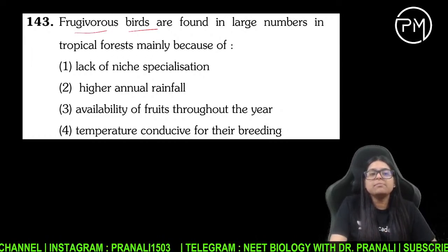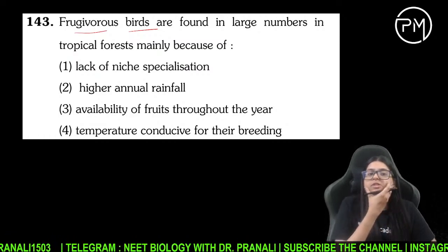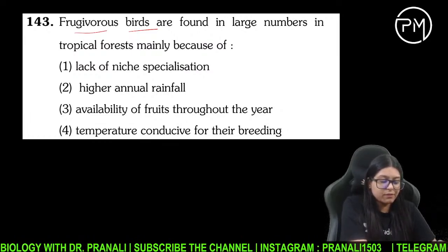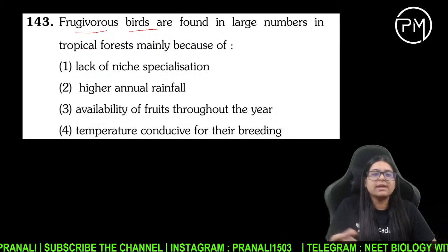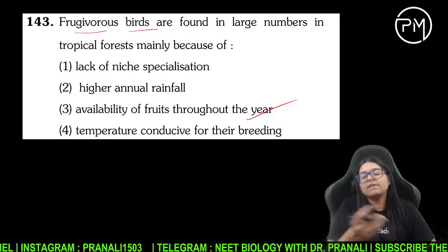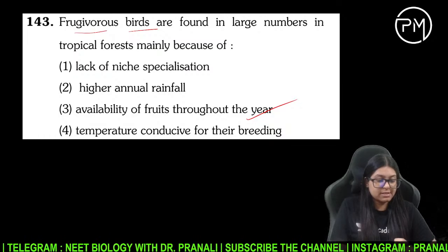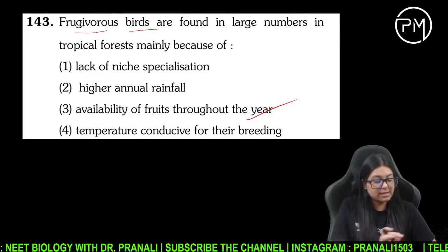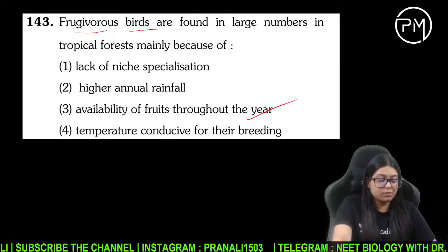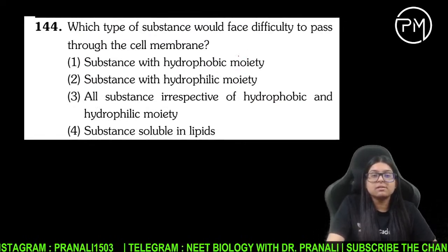Frugivorous birds kahan par milenge? Frugivorous birds tropical forest mein zyada milte hain — iska reason: frugivorous yaani ki fruit khaane waale. Tropical forest evergreen rehta hai, saal bhar fruit milta hai, toh fruit khaane waale yahin milenge.